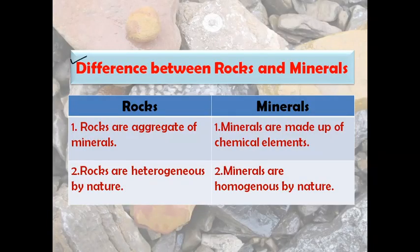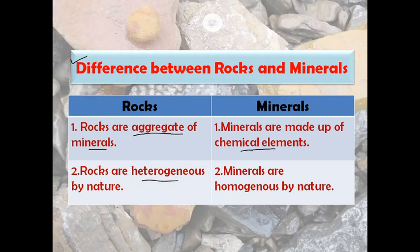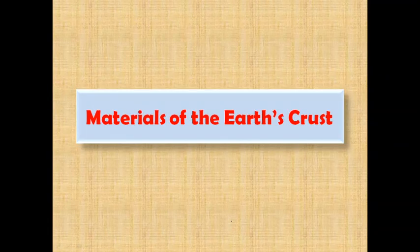Now let us look at the difference between rocks and minerals. First of all, rocks are an aggregate of minerals, and minerals are made up of chemical elements. Rocks are heterogeneous by nature because they are a mixture of different types of minerals, and in a rock, minerals do not present in a fixed proportion. On the other hand, minerals are homogenous by nature — because in a mineral, chemical elements are present in a fixed proportion. Minerals are actually compounds.